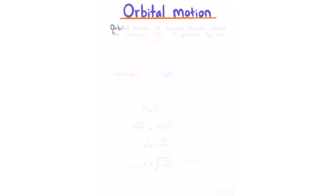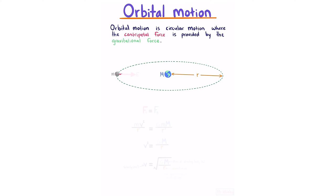Orbital motion. Orbital motion is circular motion where the centripetal force is provided by the gravitational force. Considering the moon orbiting Earth at radius r, equating the centripetal force equation (using the moon's mass) with the gravitational force equation and simplifying, we can solve for the orbital velocity.